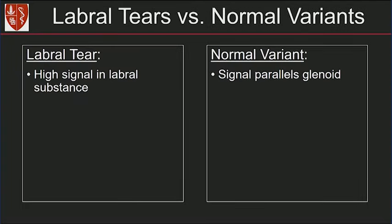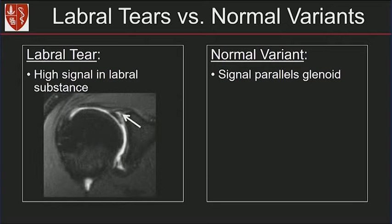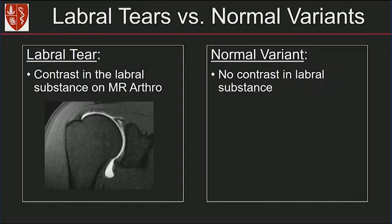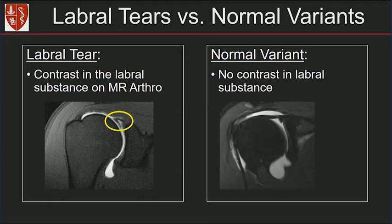How do we distinguish labral tears from normal variants? In a labral tear, you see high signal within the labral substance — abnormal high signal intensity extending into the labral substance. A normal variant, such as the sublabral sulcus, shows high signal that parallels the glenoid with nothing in the labrum itself. On MR arthrogram, contrast extends into the labral substance in tears, whereas in a normal variant, no contrast extends into the labral substance.